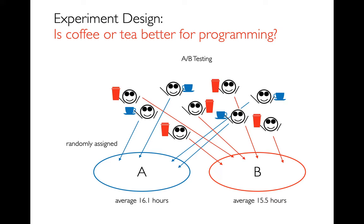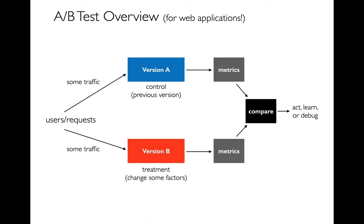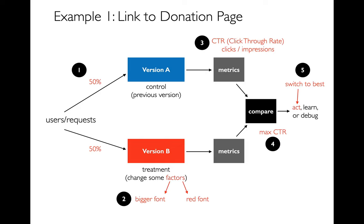What does A/B testing look like at a big company optimizing software or a product? We split traffic — users or requests — and send them to different versions: version A (the control or previous version) and version B where we vary some factors, like a bigger font or red font. We gather metrics from both groups. A common metric is click-through rate: if I show you an ad, what percentage of the time do you actually click on it? We collect these metrics and compare them.